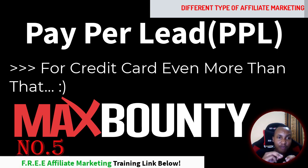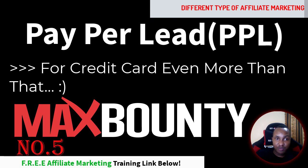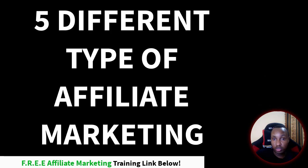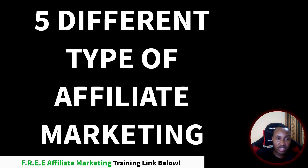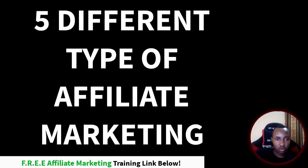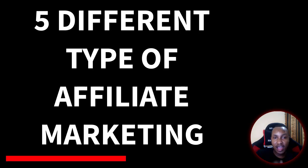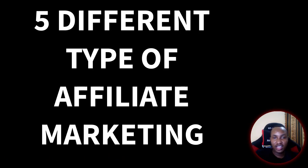So guys, those are the five types of affiliate marketing programs you should know as someone doing online business or just starting out: PPC, CPA, PPP, PPS, and PPL. Thank you so much for watching. I hope you also go and watch the other videos about CPA marketing and how to join CPA networks. Make sure you hit the subscribe button — we're going to give you cool tips for making money online and in your business. Subscribe, like this video, and leave a comment!